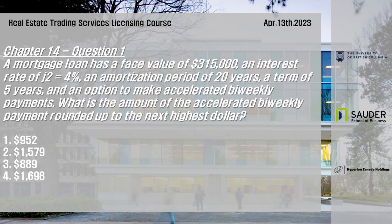Chapter 14, Question 1: A mortgage loan has a face value of $315,000, an interest rate of j2 equals 4%, an amortization period of 20 years, a term of 5 years, and an option to make accelerated biweekly payments. What is the amount of the accelerated biweekly payment rounded up to the next highest dollar? Options: 1) $952, 2) $1,579, 3) $889, 4) $1,698.